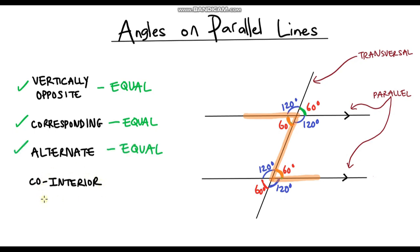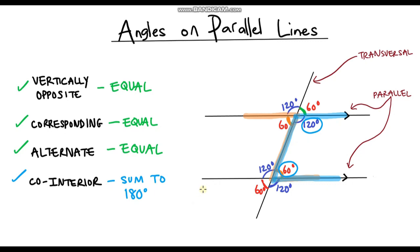The final type of angles we're going to look at are co-interior angles. On our diagram, an example of co-interior angles would be this one here and this one here. They are interior to our parallel lines. These two angles are co-interior and they sum to 180 degrees — that will be the case for all co-interior angles. So the 60 degree angle is co-interior to this angle, and they sum to 180 degrees.